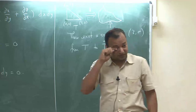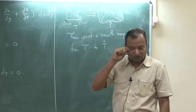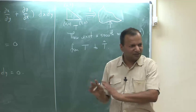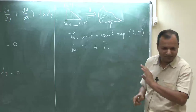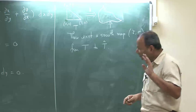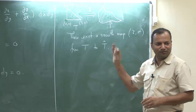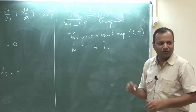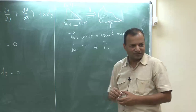That is all I am going to say about this map. I am sure all of you are convinced that there exists some map like this. If you really want a formal proof, go and read some book on real analysis.